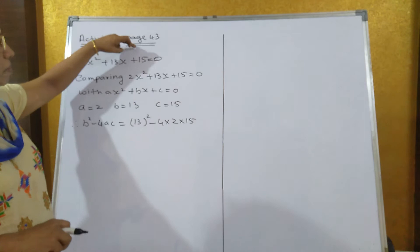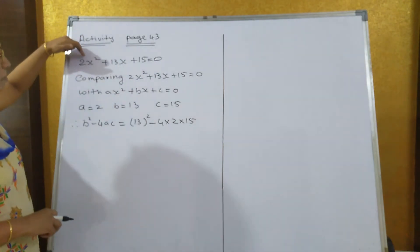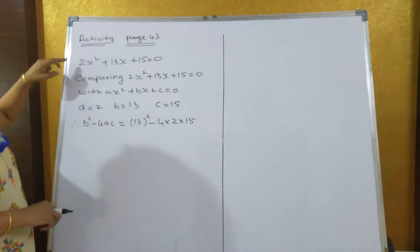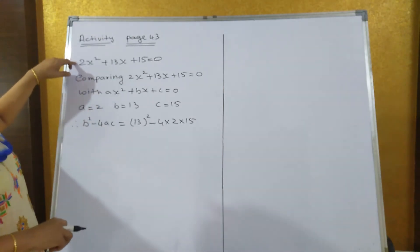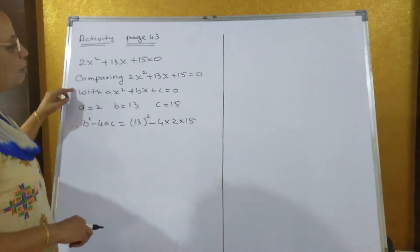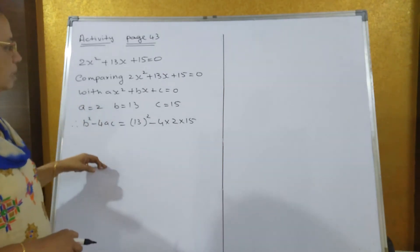Now activity page number 43, they have given one sum: 2x² + 13x + 15 = 0. You have to solve this by all three methods - by factorization, by completing the square method, and by formula method. You will find that answers will remain same.